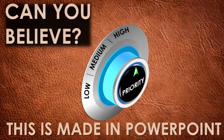Can you believe this? I did this particular design in PowerPoint. You can see here I have just created a kind of AC knob where I've just put three priorities: low, medium, and high — and my priority is always high. I did some small animation effect using the transition called Morph. Let me just show you how it looks.